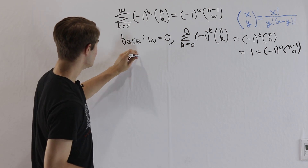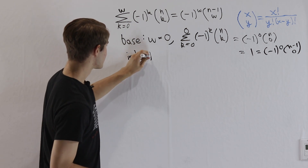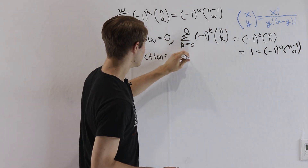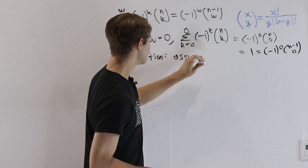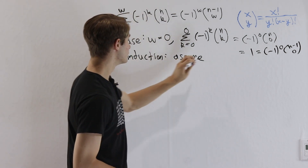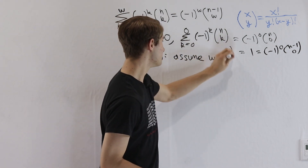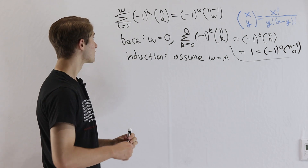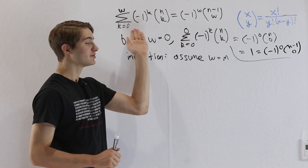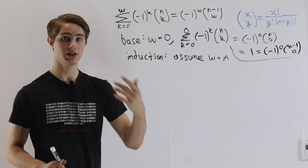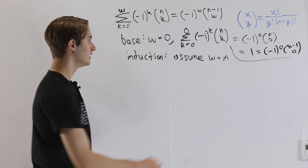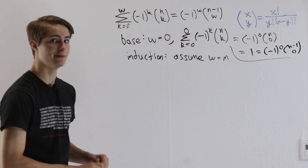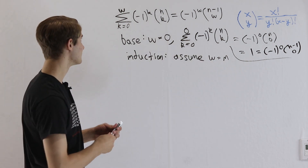Now we're going to do the induction step, which says we assume that this identity is true for w equals m. And we're going to ask: what is this sum for w equals m plus 1? We're going to use the fact that we know it's true for w equals m to figure that out.